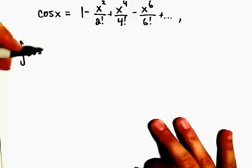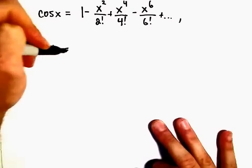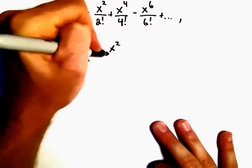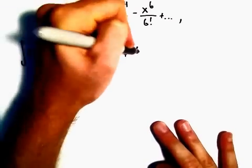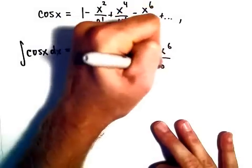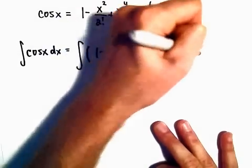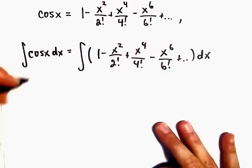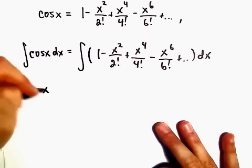So what I'm going to do is integrate both sides of our function here. Okay, so on the left side the antiderivative of cosine is just going to be sine x.